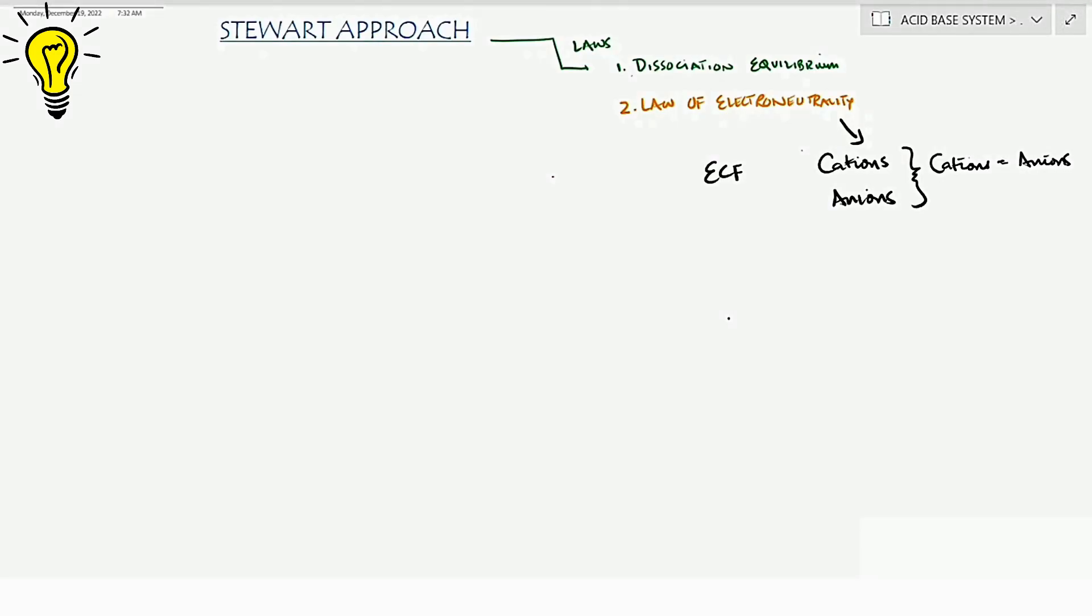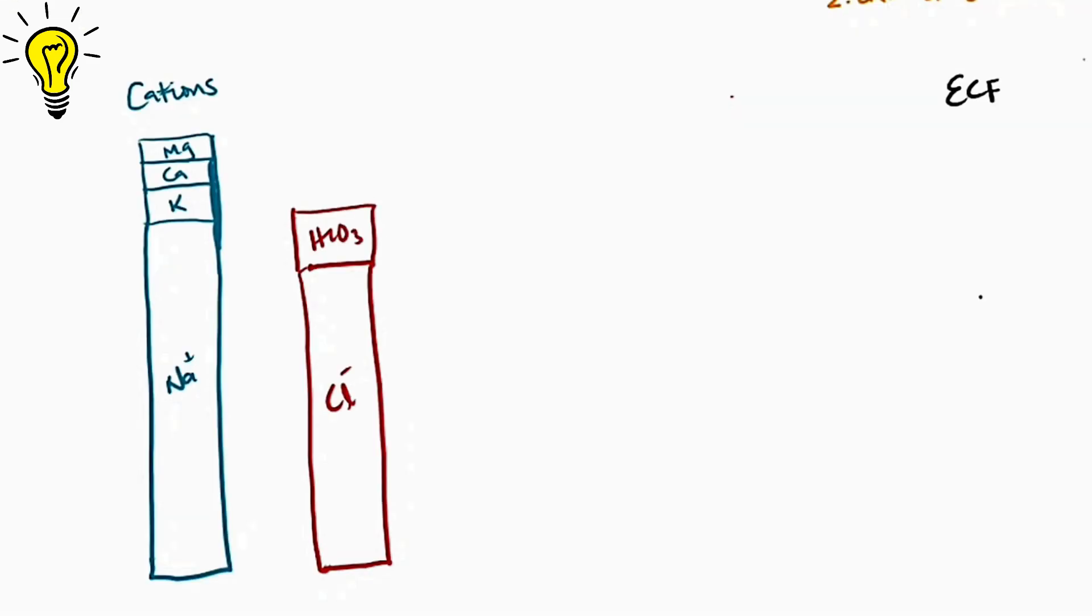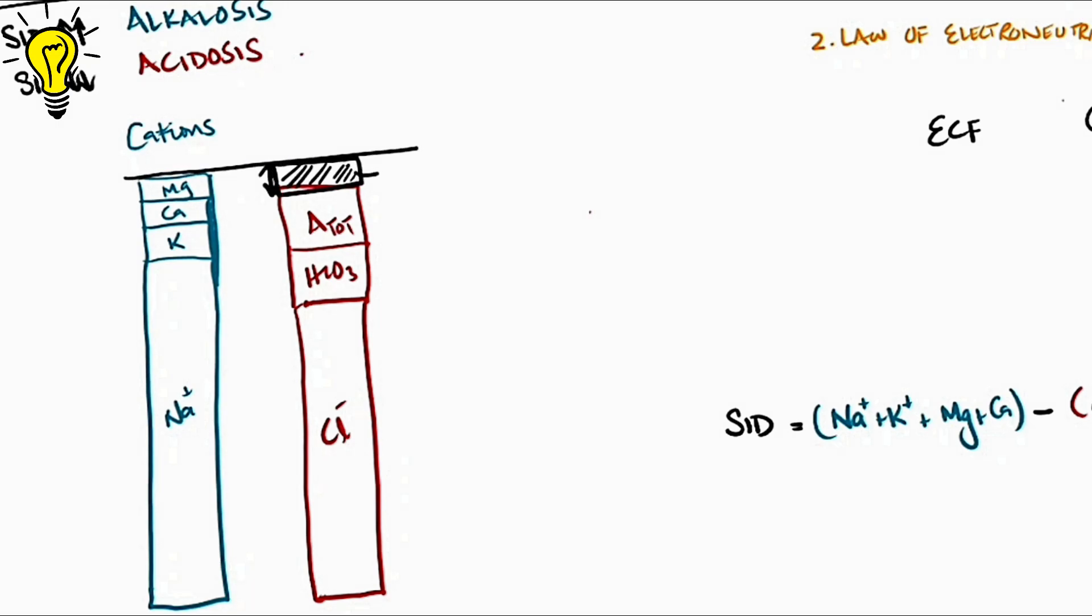So let's see strong ions now. Strong ions are the ones that completely dissociate in solution like HCl which completely dissociated giving off chloride. So chloride is a strong ion. Similarly, sodium, potassium, calcium, magnesium - these are all strong ions. Just remember in the body, cations should equal the anions. So the difference between the sum of cations minus the sum of measurable anions is called the strong ion difference. Since weak acids remain relatively constant under the third law which is the law of mass conservation, the strong ion difference value is around 42. This 42 represents the unmeasured anions in the body.